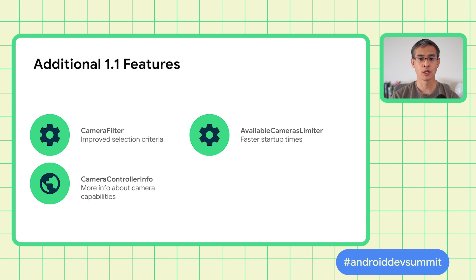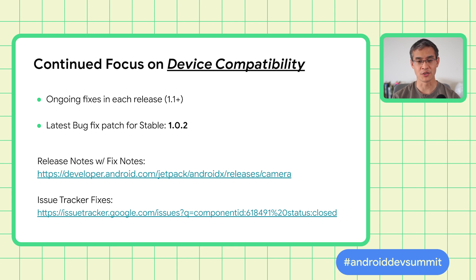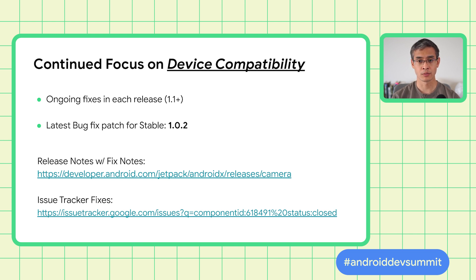Camera controller info provides more detailed information about camera capabilities. CameraX continues its core focus on device compatibility, so apps work well across many devices. Some examples of fixes include stretched images, incorrect zoom settings, upside down images, issues when closing the camera, green output images, and more. Each CameraX release adds fixes, and critical fixes are also placed in patch versions for stable — the latest is 1.0.2. If you'd like to see what's been fixed, the release notes list fixes in each release, and the issue tracker will list issues that have been fixed.